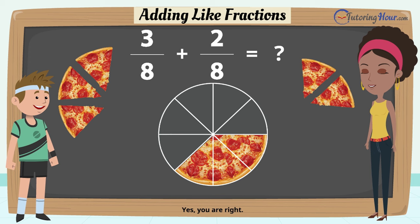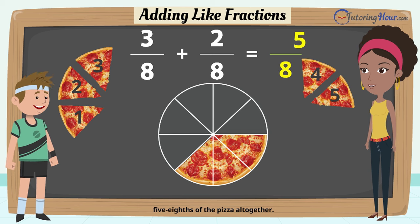Yes, you are right. Jake and Amanda ate five out of the eight slices or five eighths of the pizza all together. Yippee, we've got the answer.